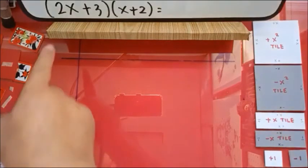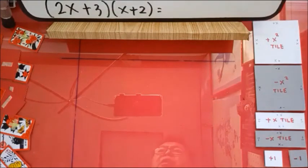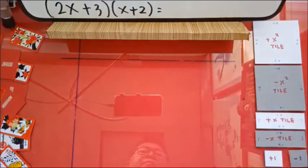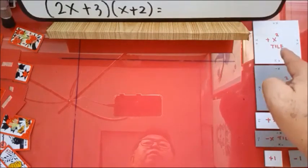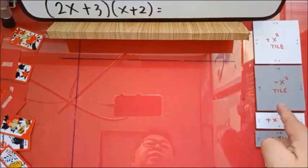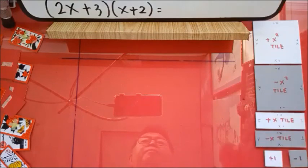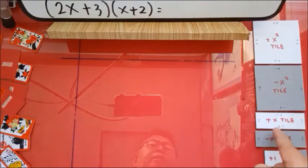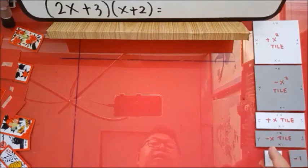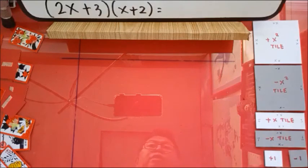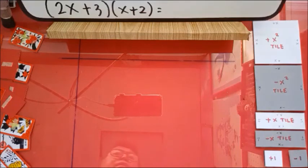We have one example here: (2x + 3)(x + 2). Now I will represent the tiles. The bigger square one — the white one — is the positive x squared tile; the gray one is the negative x squared tile. The longer rectangle is the positive x tile; the gray one is the negative x tile. Then the smaller units: positive one unit and negative one unit for the gray tile.